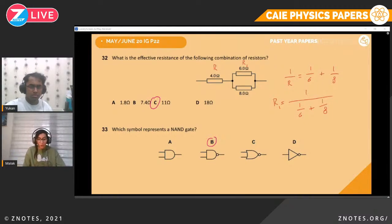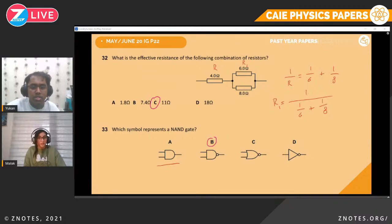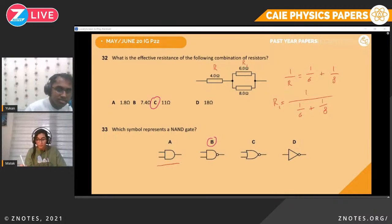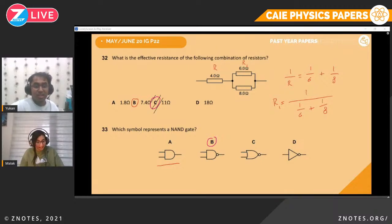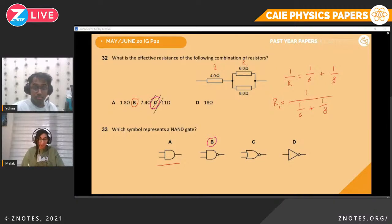Question thirty-three. Which symbol represents NAND? We know the AND gate looks like an electricity plug shape. NOT is a triangle with a circle. NAND is the combination — an AND gate with a circle at the output. Pretty straightforward.